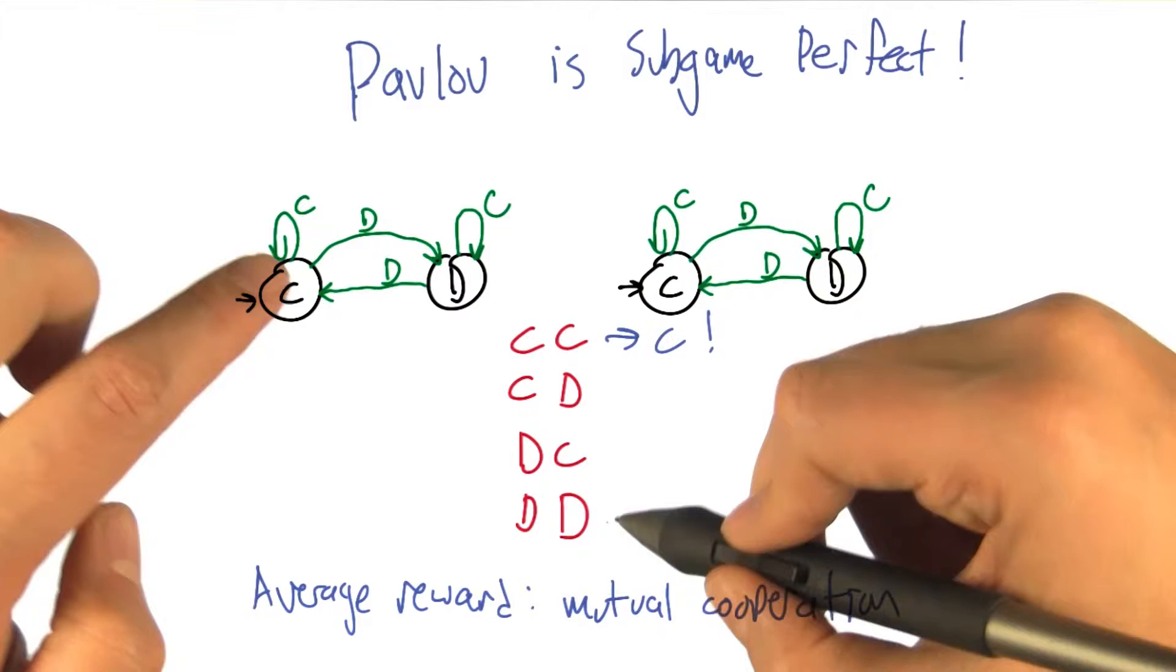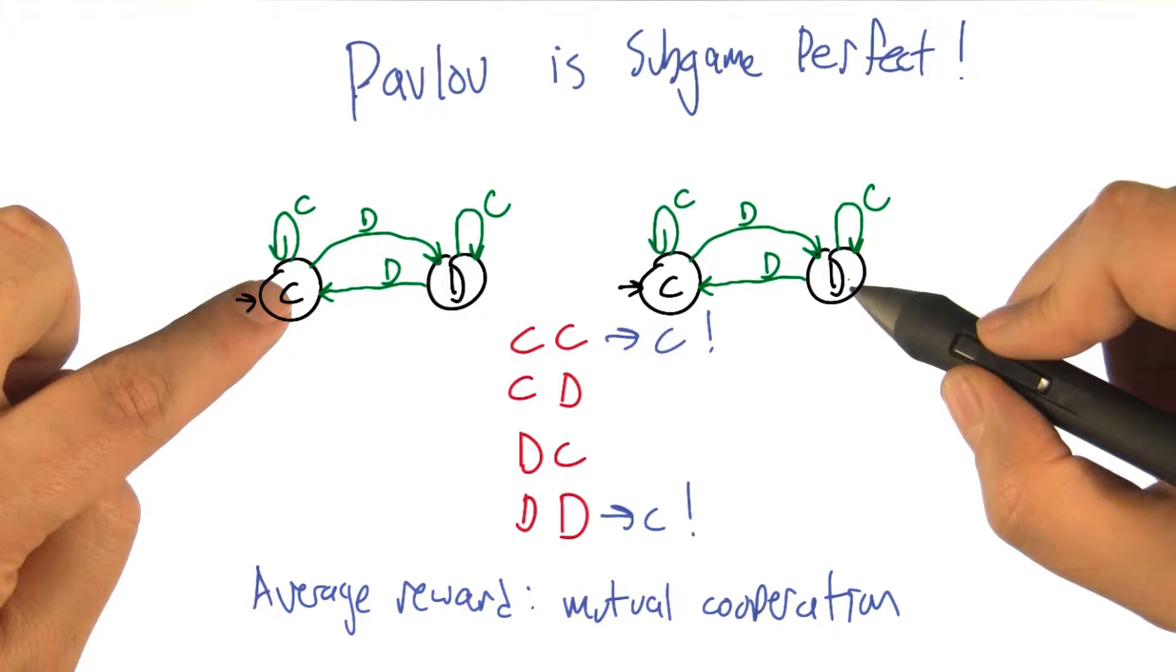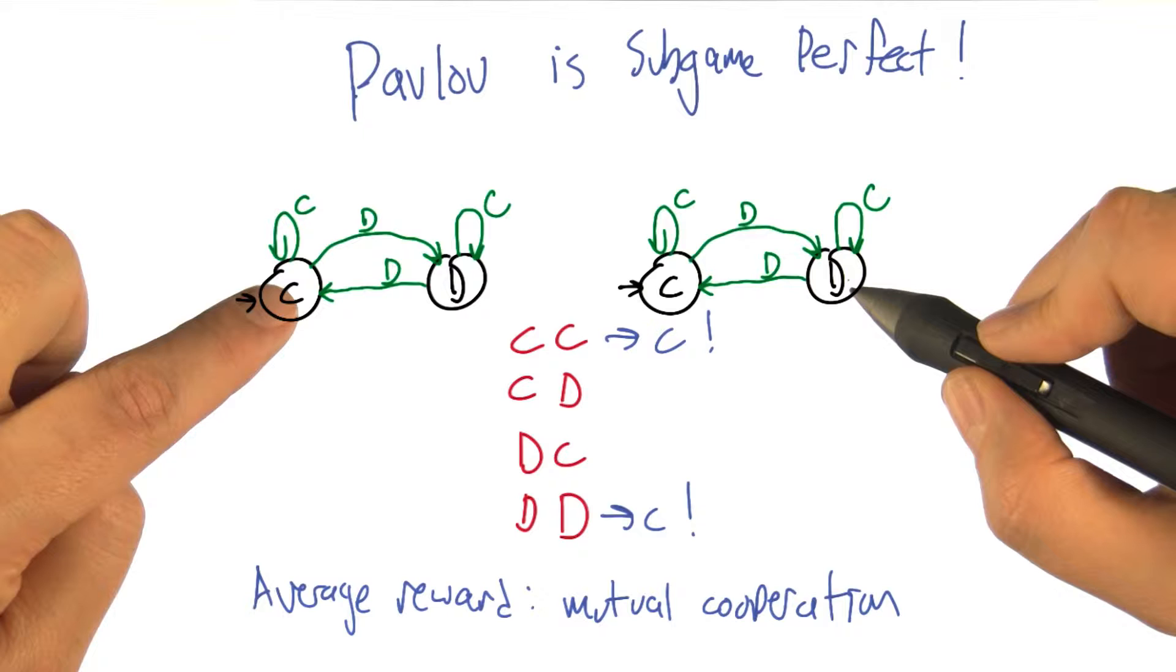What if one's in cooperate and one's in defect? Then they disagree. Right. And they move to the other state. More specifically, what? Oh, I don't know. I can't remember. I'm trying to keep track of who's who.